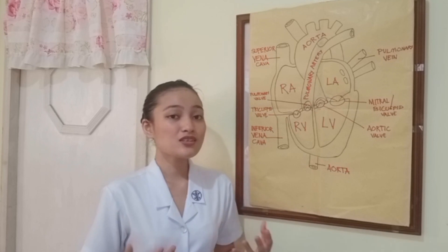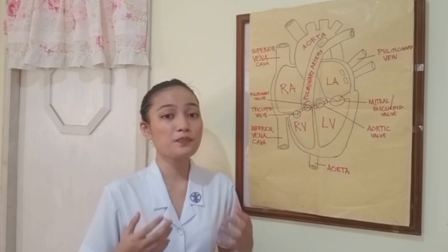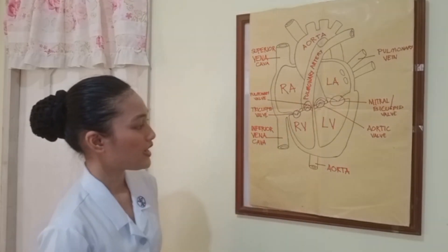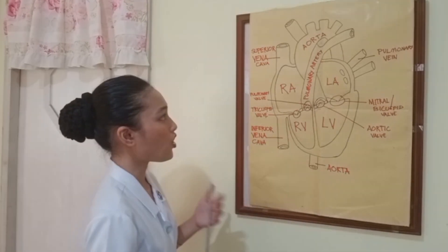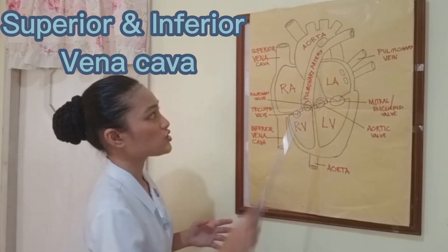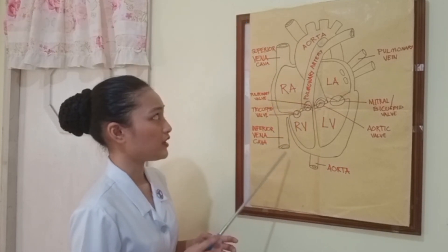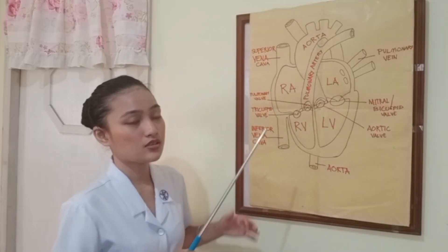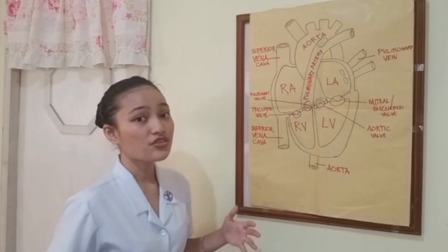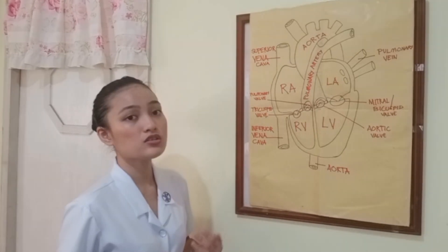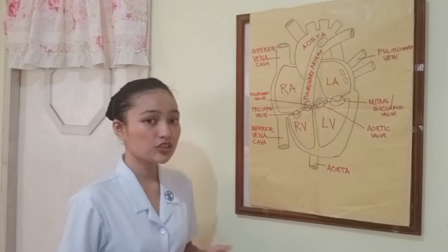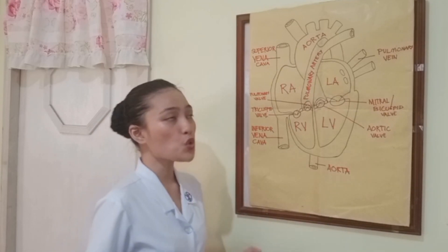Now let's continue with identifying the different parts of the heart and its functions. This is an illustration of the heart that I have drawn. We'll begin with the superior and inferior vena cava — superior because it's on the upper part and inferior because it's on the lower part. These are the largest veins in the body and are responsible for carrying deoxygenated blood into the heart. Deoxygenated just means blood low in oxygen.